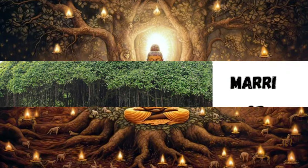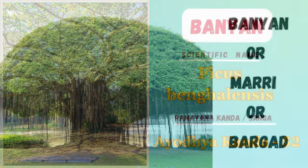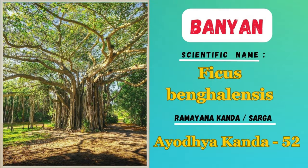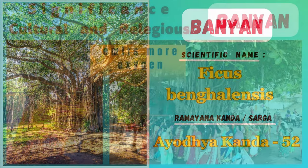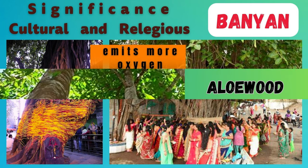Banyan, also known as Marri or Bargad — the Banyan is believed to be a symbol of immortality and is mentioned in the Ramayana as a sacred tree. Its extensive branches and aerial roots give it a unique and remarkable presence.